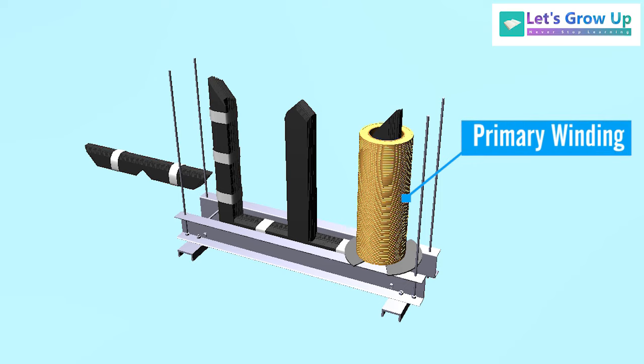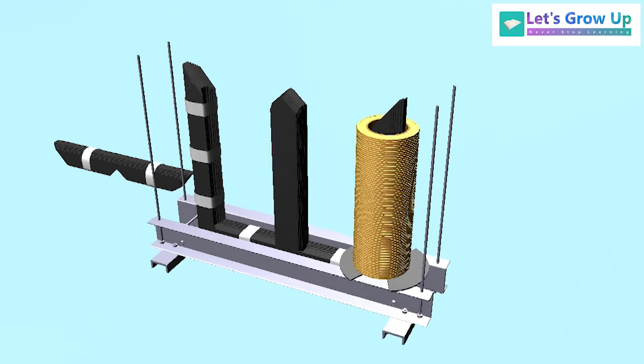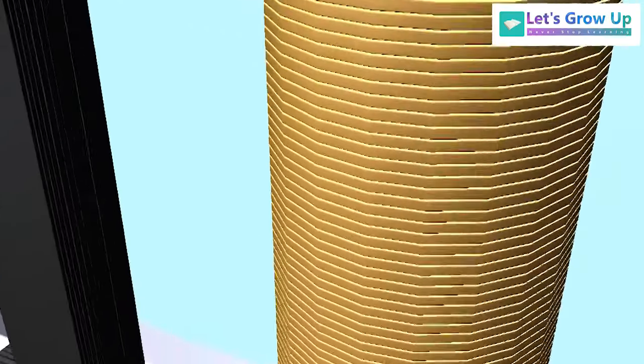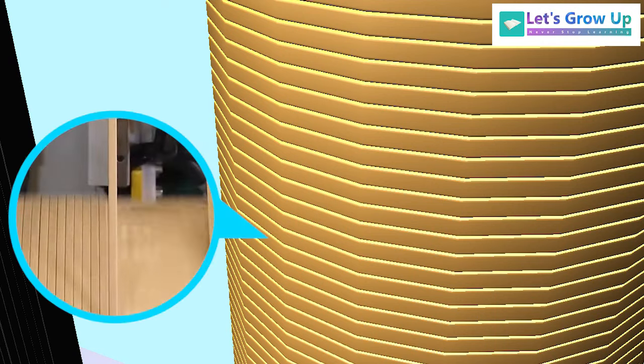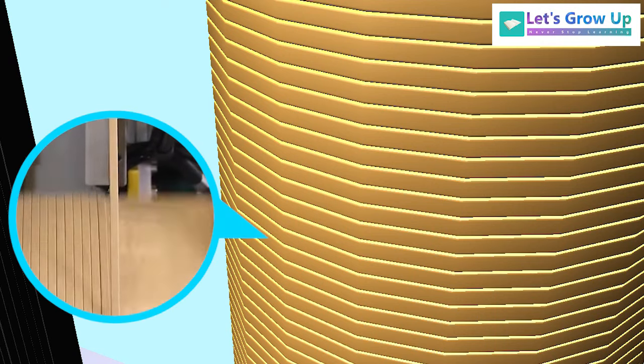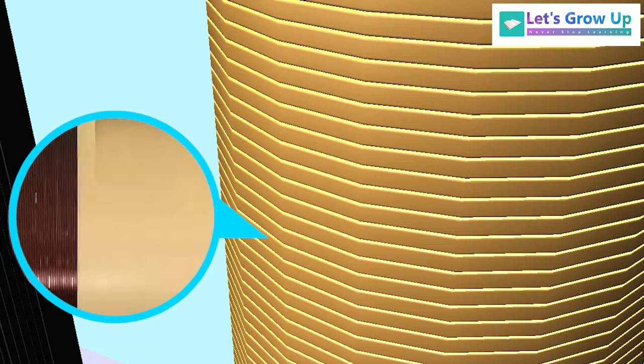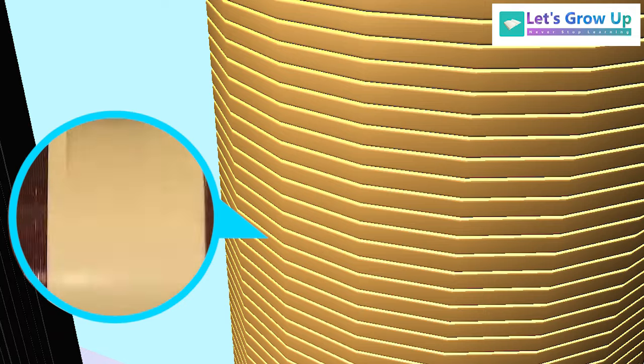Primary winding or low voltage winding is always placed inner side of core. Windings are electrically insulated from each other through insulation material. Copper and aluminum both conductors are used in transformer windings. The winding also insulated by insulation material.